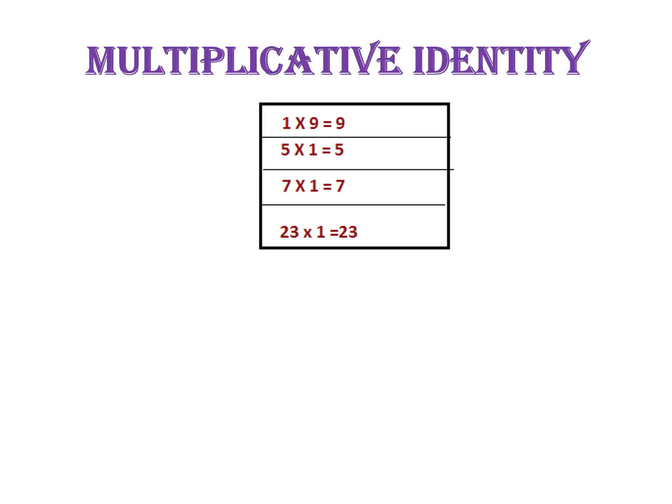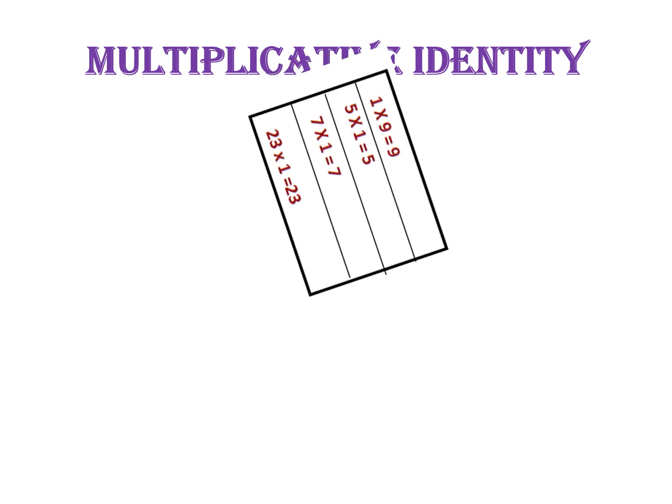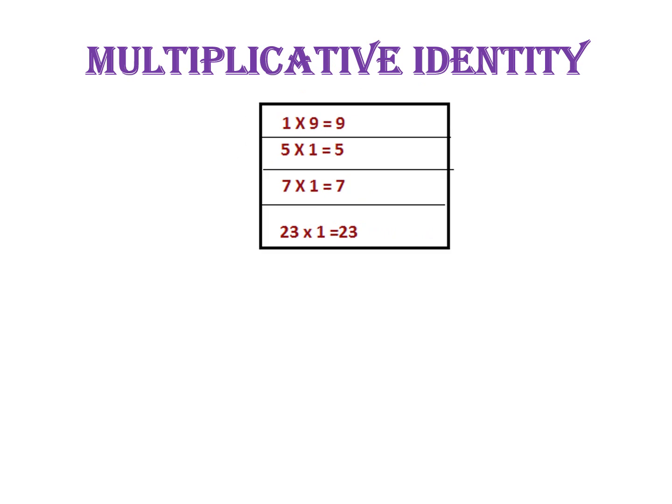Next topic is multiplicative identity. Let's see the table: 1 into 9 is equal to 9, and 5 into 1 is equal to 5. We see that when one of the two numbers is multiplied by 1, the result of multiplication is equal to the other number. So we can say that 1 is the multiplicative identity of whole numbers. I hope you all understood the properties of whole numbers. Thank you.